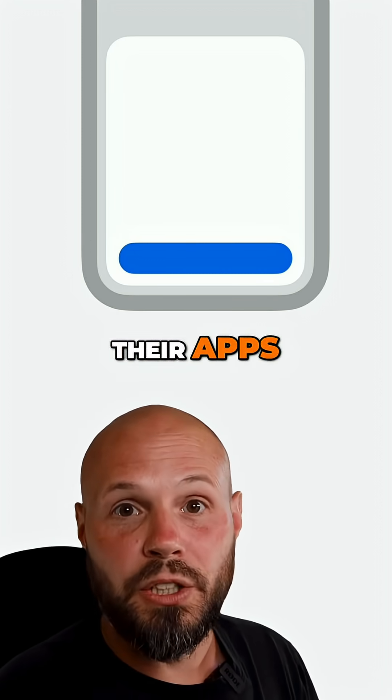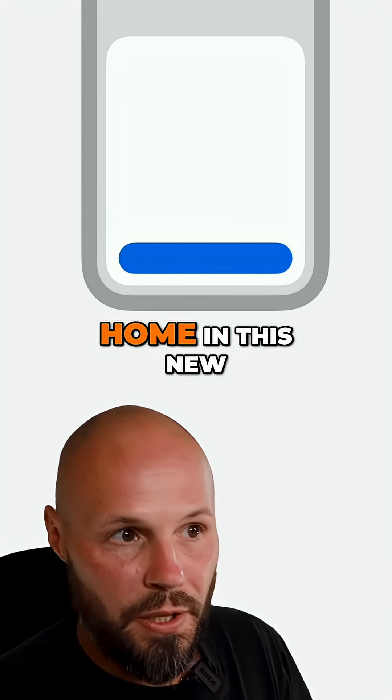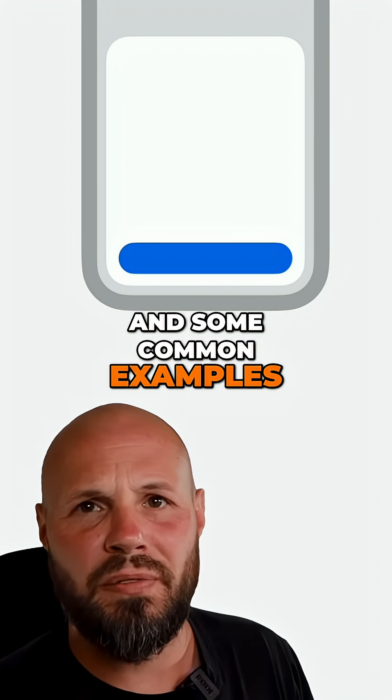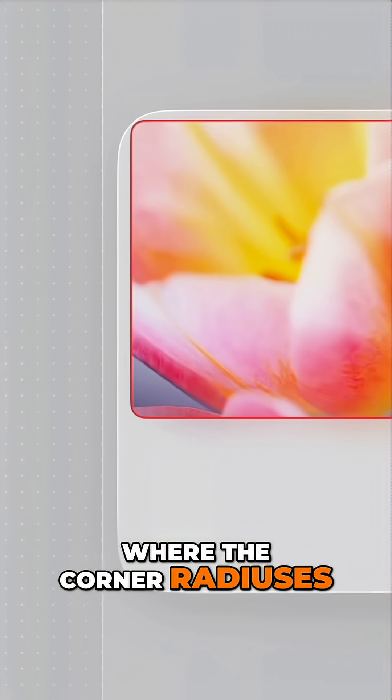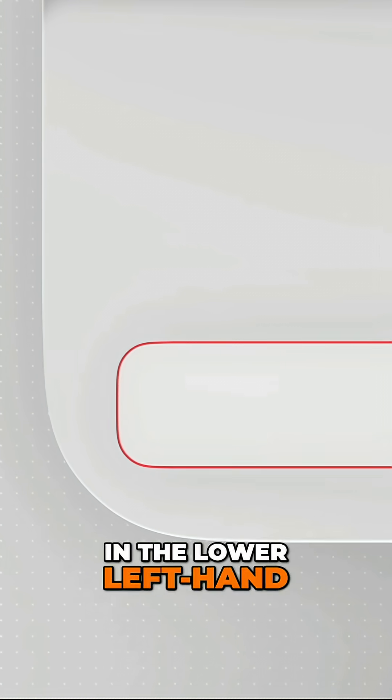Because Apple is leaning into this so heavily in their own apps, your app is also going to have to lean in heavily if it wants to feel at home in this new liquid glass design language. Some common examples: content in a card — you can see here where the corner radii don't line up perfectly and it just feels off. So make sure your content is concentric with the rest of the UI and the edges of the device.